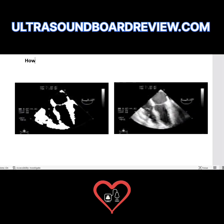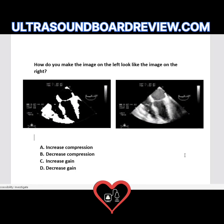On your test, they'll label two images A and B and ask how do you make image A look like image B. You would decrease your compression — when you decrease your compression, you're adding more grays, making the dynamic range wider, lowering the contrast, increasing your dynamic range and your grayscale because you have more choices.